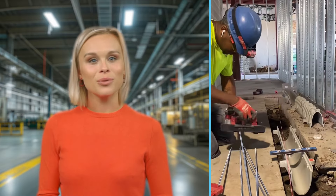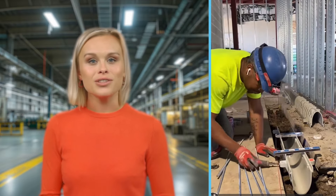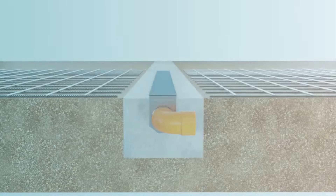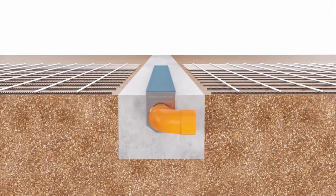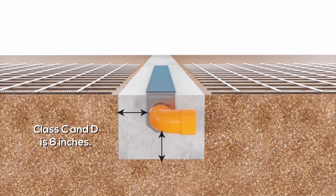Channels are usually suspended by rebar and concrete is poured underneath and around the channel. The size of the concrete encasement also depends on load class, with typical concrete encasements ranging from 4 inches to 12 inches.